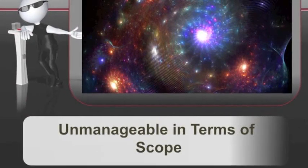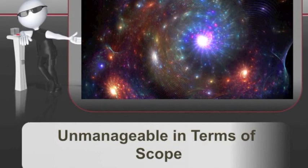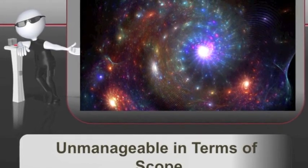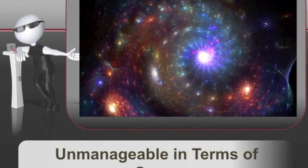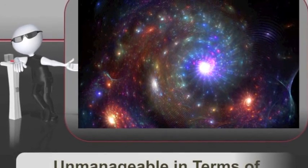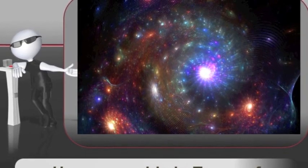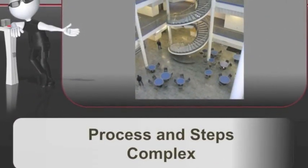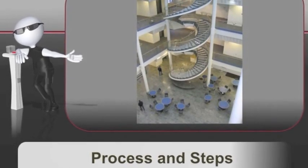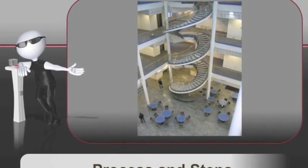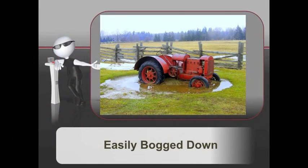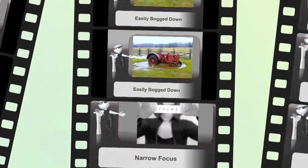Other disadvantages include the sheer scope of the model. There are multiple people, multiple languages, and multiple systems all interfacing together. As the model's designers said, each player plays a different instrument but also speaks a different language. Another disadvantage is the complexity of the design process. There are 20 to 28 different steps, and it can be difficult to follow the sequence without getting bogged down in it.